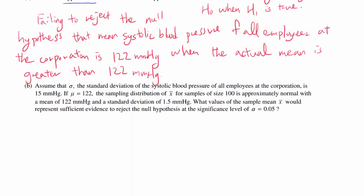Part B: Assume that sigma, the standard deviation of the systolic blood pressure of all employees at the corporation, is 15. If mu equals 122, the sampling distribution of sample means for samples of size 100 is approximately normal, with a mean of 122 millimeters of mercury and a standard deviation of 1.5 millimeters of mercury. What values of the sample mean would represent sufficient evidence to reject the null hypothesis at a significance level of alpha equals 0.05?